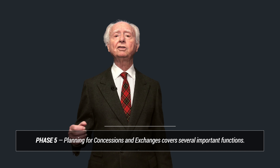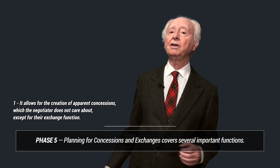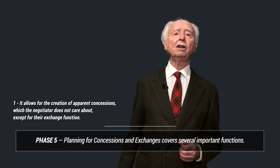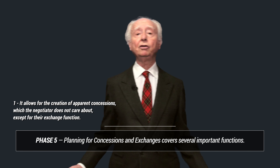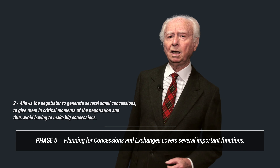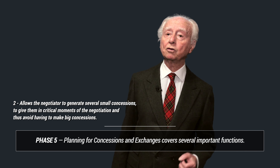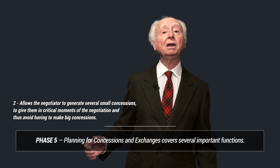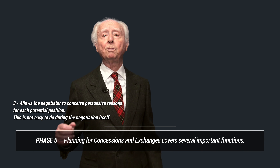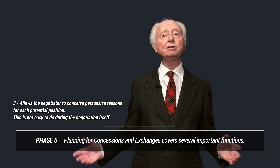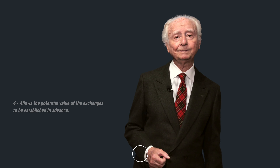Phase 5: Planning for concessions and exchanges covers several important functions. First, it allows for the creation of apparent concessions which the negotiator does not care about, except for their exchange function — for example, to grant something for a reciprocal concession later that is of real value to us. Second, it allows the negotiator to generate several small concessions to use at critical moments, thus avoiding having to make big concessions. Third, it allows the negotiator to conceive persuasive reasons for each potential position, which is not easy to do during the negotiation itself. Fourth, it allows the potential value of exchanges to be established in advance.